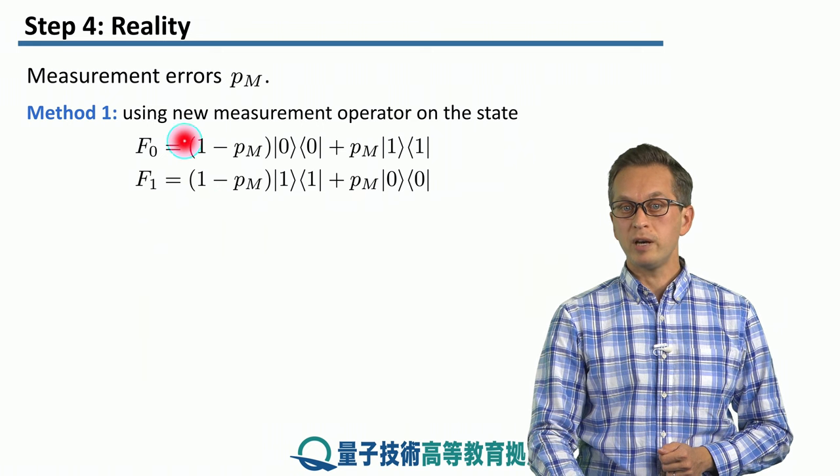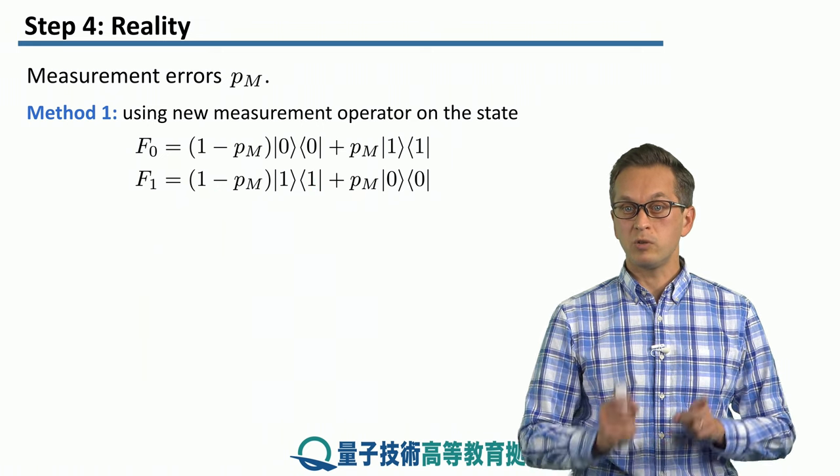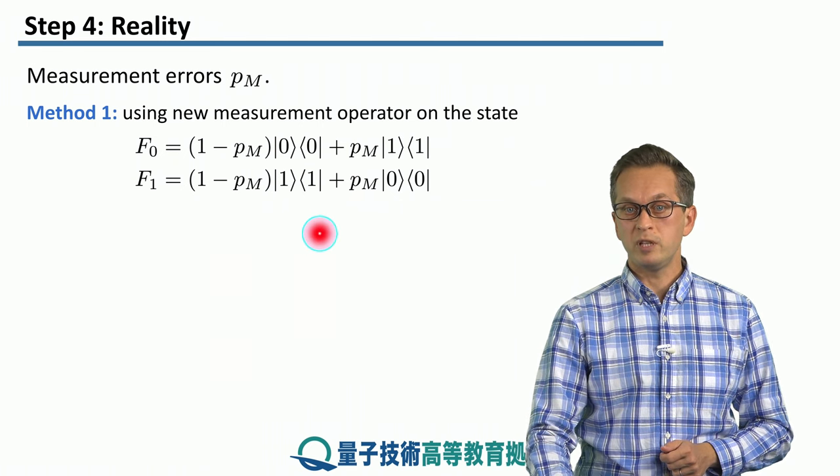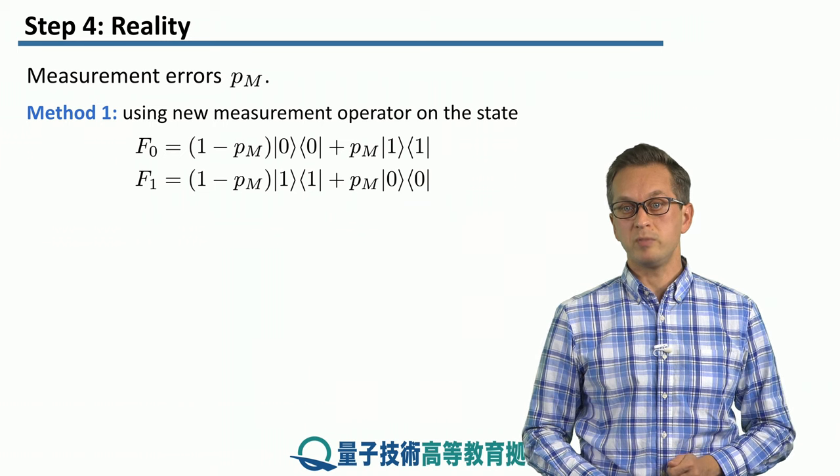And similarly for the other projector F1. With probability 1 minus PM, we are projecting onto the correct eigenspace given by A1. And with some error probability PM, we project onto the wrong eigenspace given by zero.